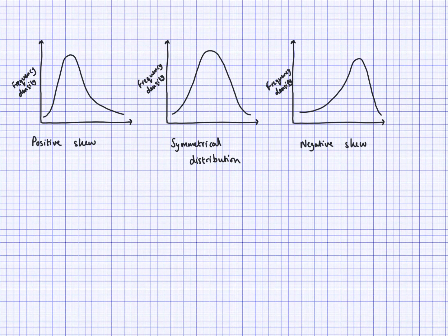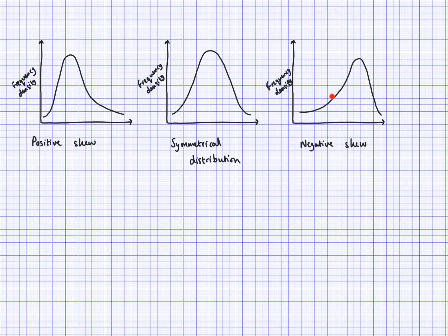I've drawn three distributions here — three different shapes. In the first one I've tried to draw a positive skew where there's a lot of data here and then some more data tailing off on the right-hand side. Here I've tried to draw a symmetrical distribution where the median and mean will both be somewhere in the middle. And here I've drawn a negative skew where the mean would be more to the left of the median. In the positive skew the mean would be further right and the median would be more on the left side.